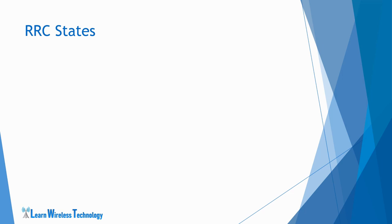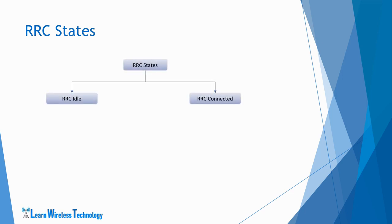Now let's see the different RRC states defined in LTE. RRC has two states: RRC idle and RRC connected. There are different services and functions performed in each state. RRC idle is a state where no RRC connection exists between the UE and EUTRAN, while in RRC connected state there is an active RRC connection established between UE and EUTRAN.